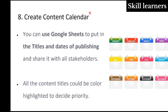Once all strategies are followed, the next part is creating content calendars. As part of your content strategy, you need to know exactly when you want to publish your content on each platform. For example, you can use Google Sheets to put in the titles and dates of publishing and share it with all stakeholders. All content titles could be color-highlighted to decide priority. Once published, each row also needs to be checked in by the SEO team for all on-page activities. A calendar and timeline help you organize what content is going where and when.